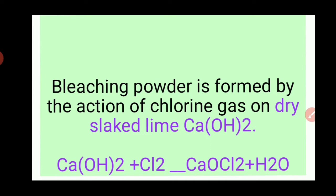Calcium hydroxide is the formula of slaked lime. Chlorine gas acts on the slaked lime and forms calcium hypochlorite, which is the formula of bleaching powder.